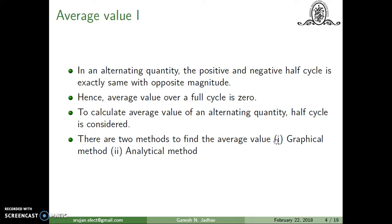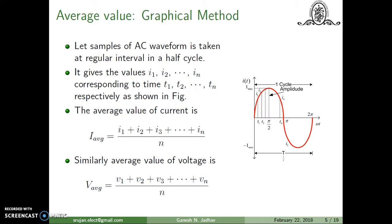There are two methods to find the average value. One is called the graphical method and the second is called the analytical method. The graphical method is suitable when the equation is not known, but the analytical method is suitable when the waveform can be represented using equations.